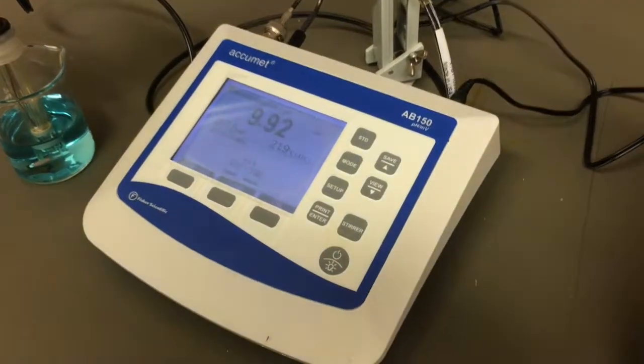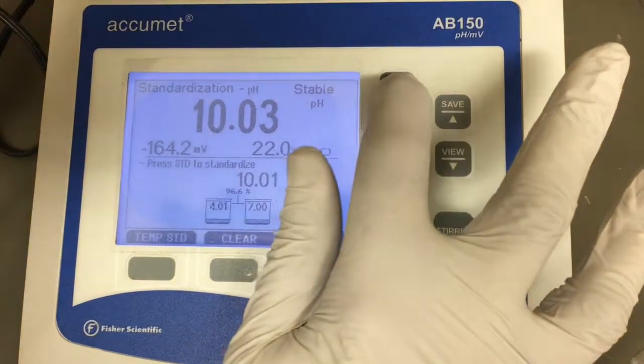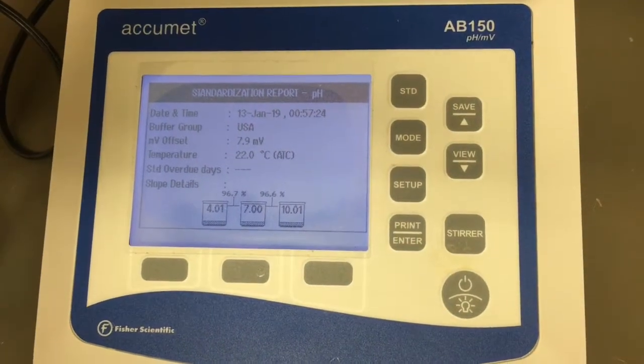Once calibration is successful, you can begin measuring the pH of your desired solution. The Acumet AB150 generates a report confirming the successful calibration of the machine.